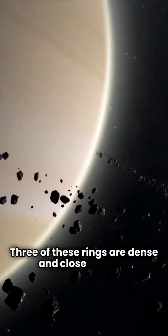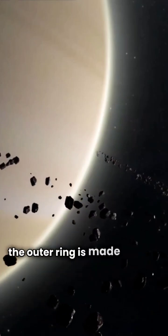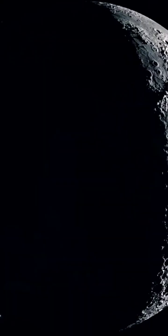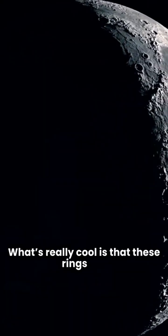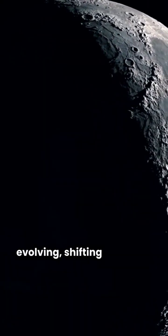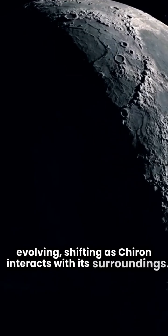Three of these rings are dense and close in, while the outer ring is made of water ice and dust. What's really cool is that these rings are evolving, shifting, as Chiron interacts with its surroundings.